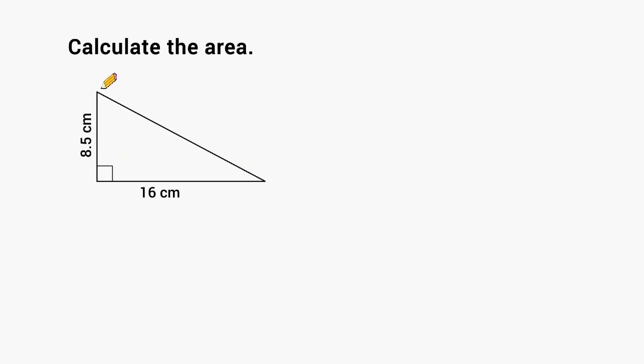If we took this triangle right here and we flipped it over on itself, we could form a rectangle that looks something like this. And we can clearly see that this triangle occupies half the space of its rectangle.